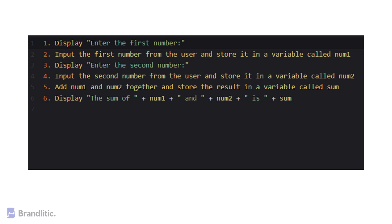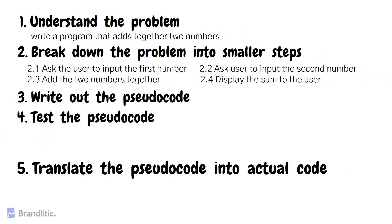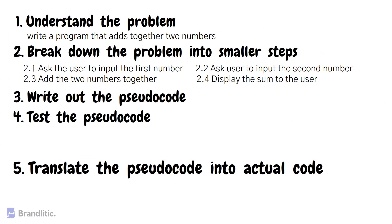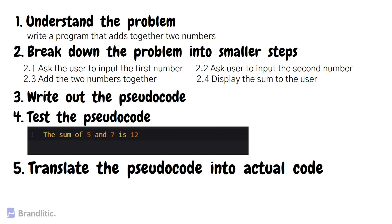Step four, now let's test the pseudocode. To test the pseudocode, we can run through it manually and make sure that it produces the correct output. Let's say the input is five for num1 and seven for num2. Then the program output should be the sum of five and seven is 12.